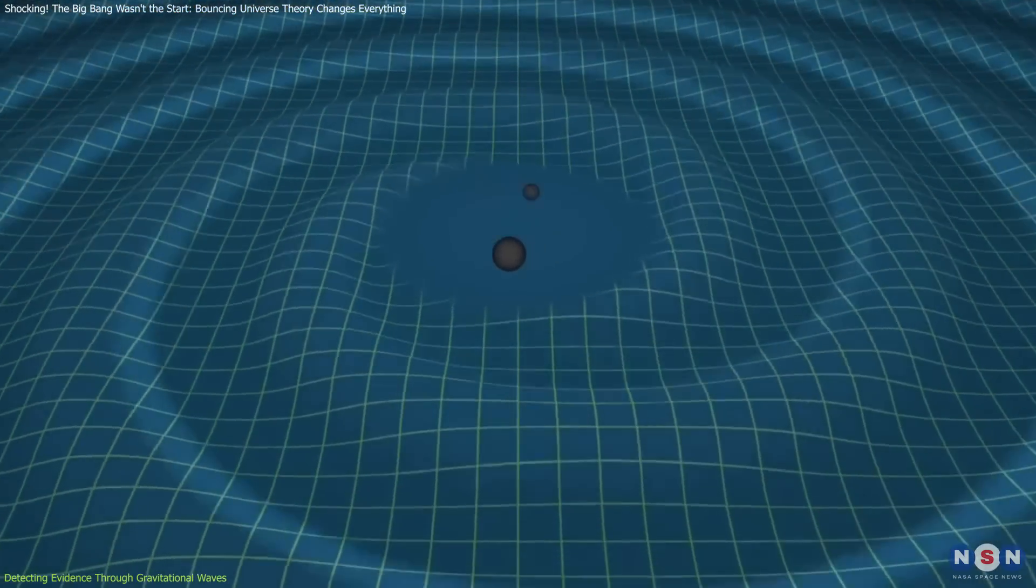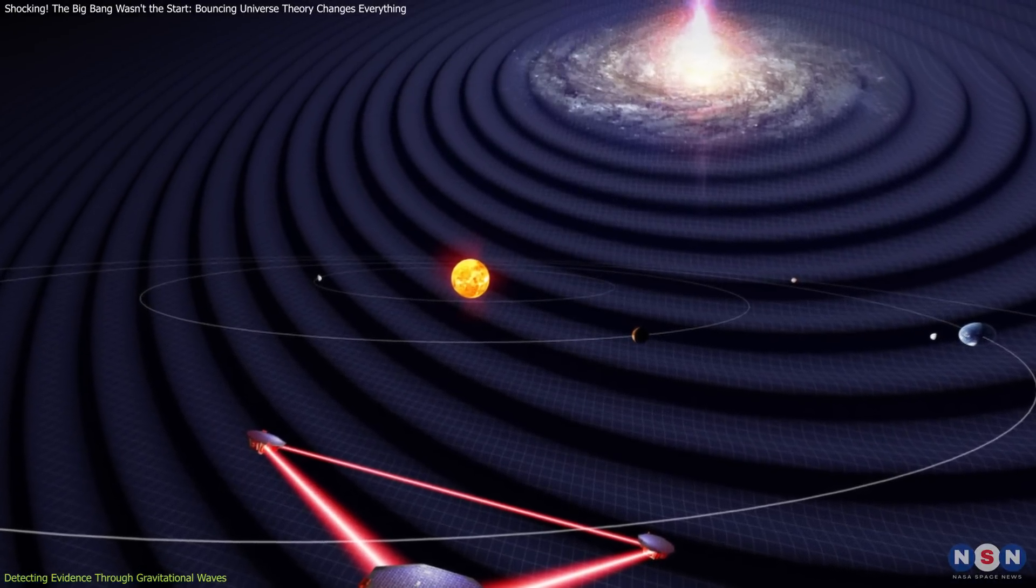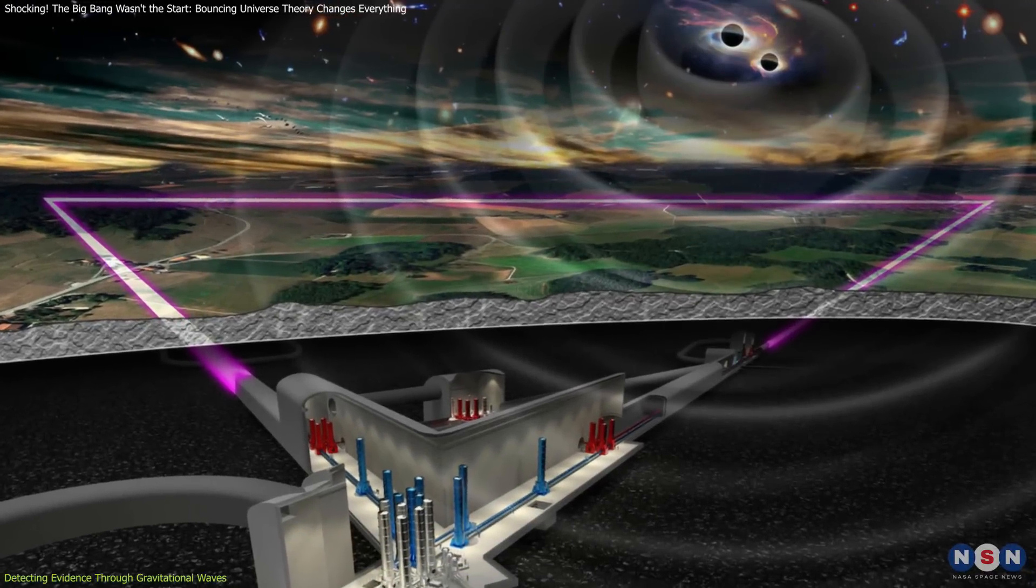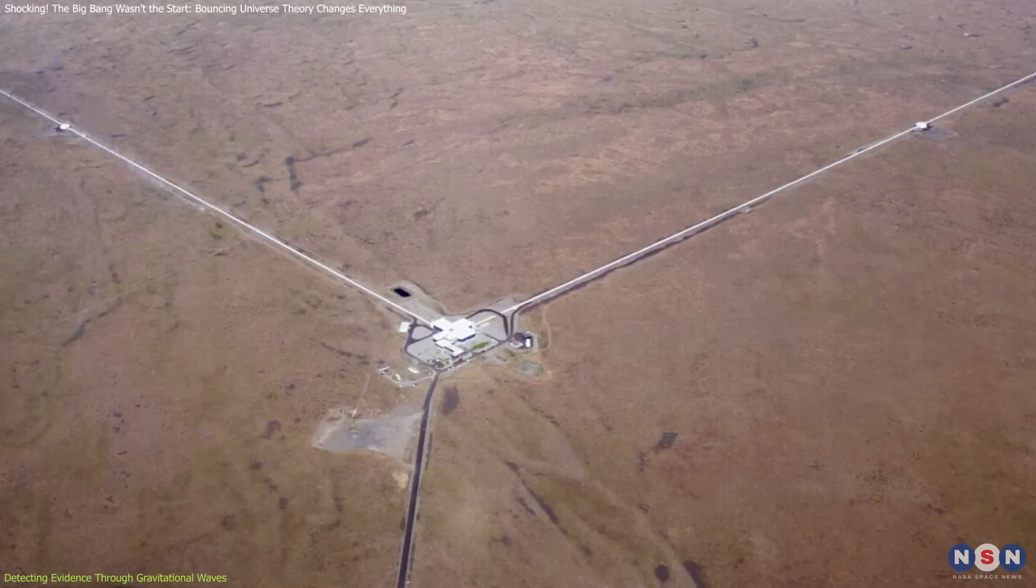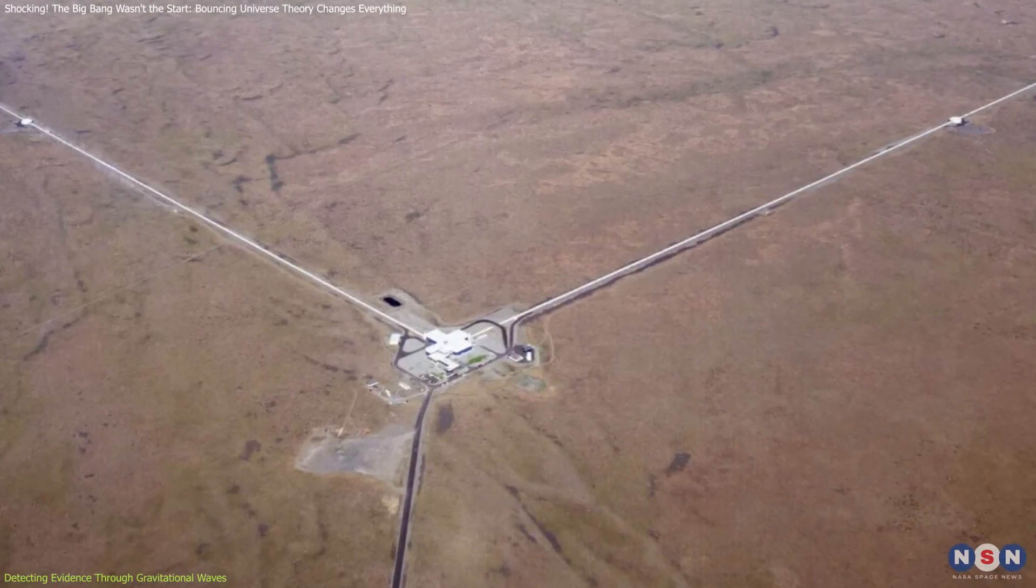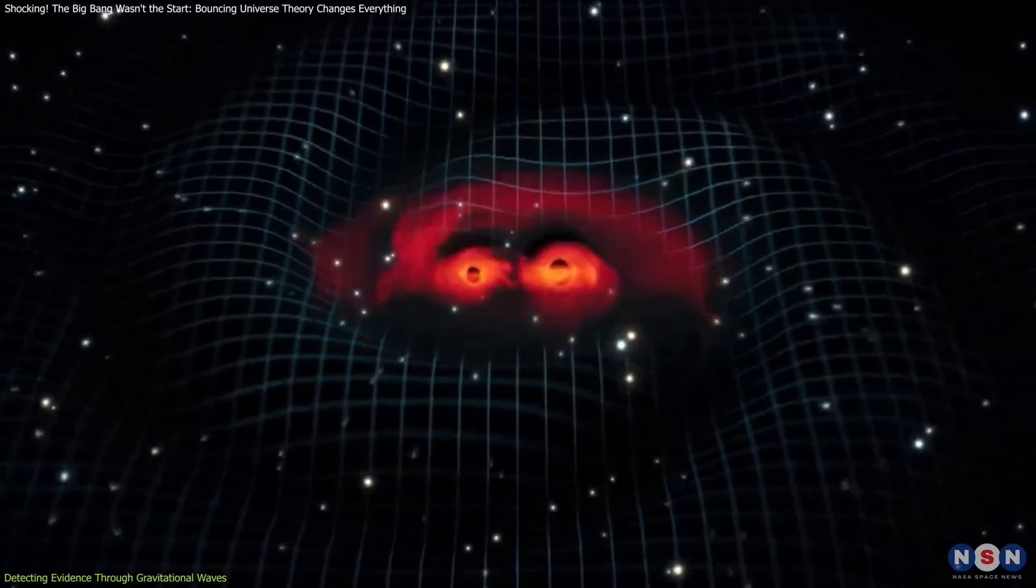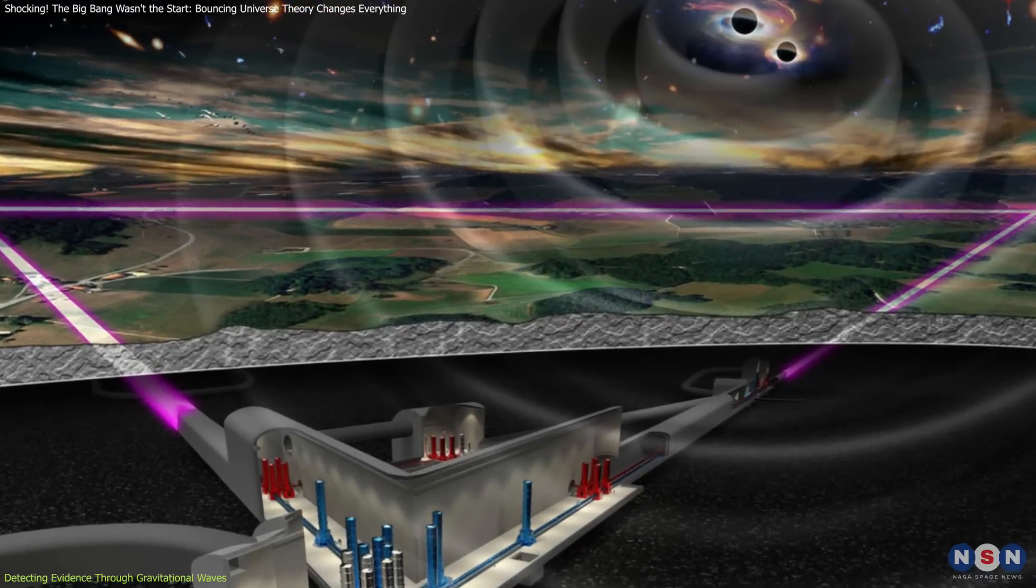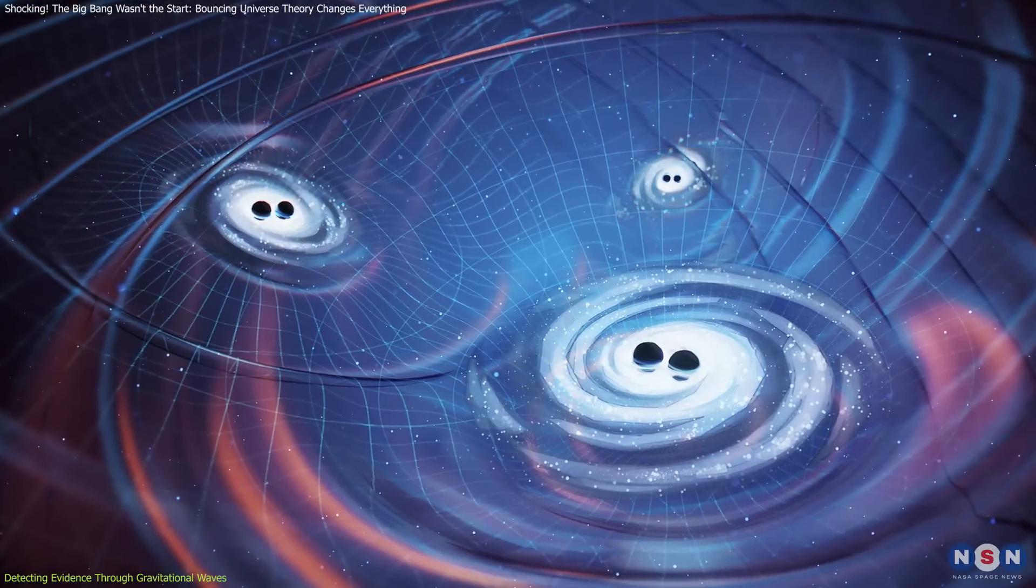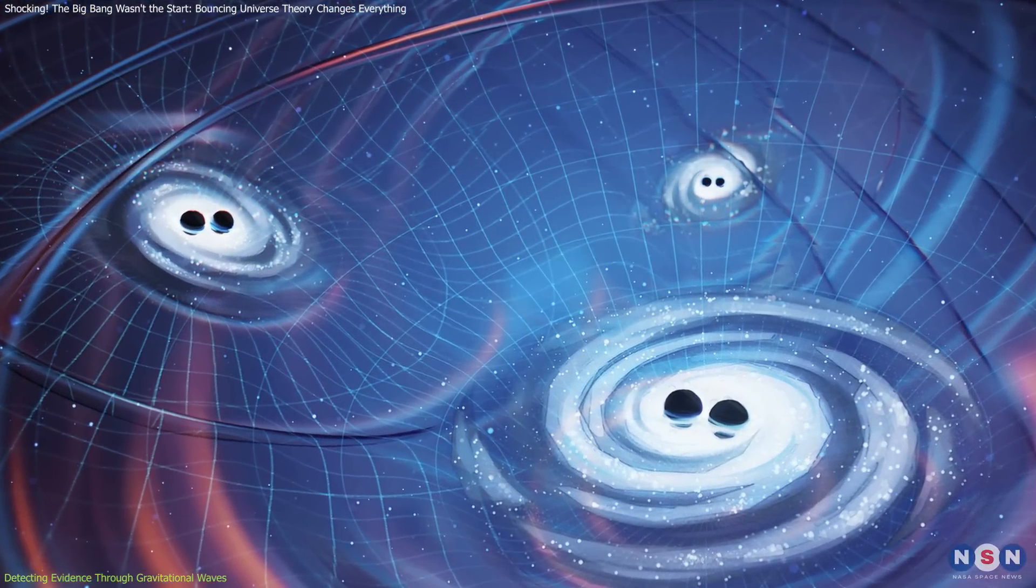Next-generation gravitational wave observatories, such as the Laser Interferometer Space Antenna, LISA, and the Einstein Telescope are being designed to detect these subtle signals. Unlike current ground-based observatories like LIGO and Virgo, which primarily detect high-frequency gravitational waves from relatively recent cosmic events, LISA and the Einstein Telescope will be sensitive to low-frequency waves. These low-frequency gravitational waves are believed to have originated from much earlier in the universe's history, potentially dating back to the time of the bounce itself.